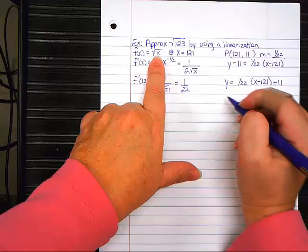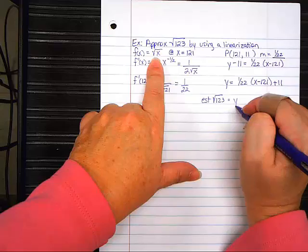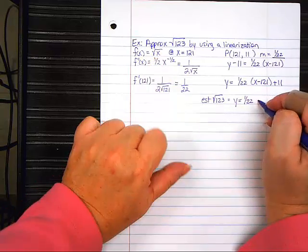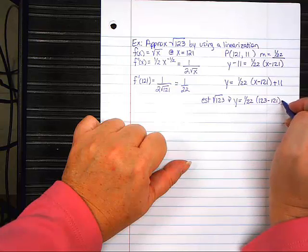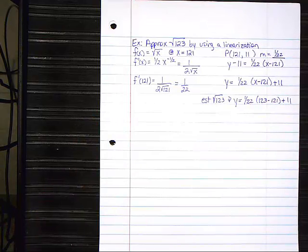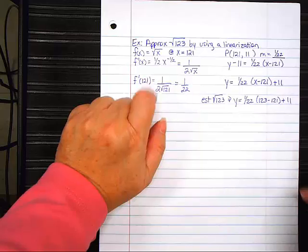I can now use this to estimate the square root of 123 because 123 is x. So, what I'm going to do is to estimate the square root of 123. I get y equals 1 over 22, 123 minus 121, plus 11. You substitute 123 in for x because the x and the 123 were in the same spot.